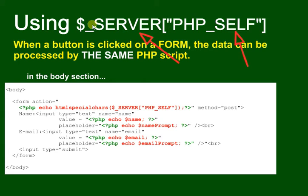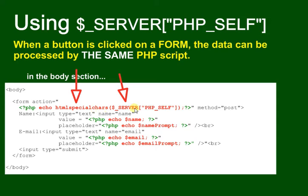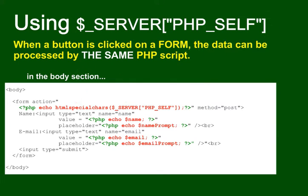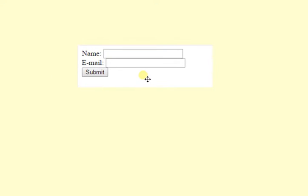We're going to make a form where the action calls itself. The action equals htmlspecialchars, which gets rid of any characters that shouldn't be there in a file name. The method is still POST. The form will look pretty much the same as before — two text boxes and a submit button.